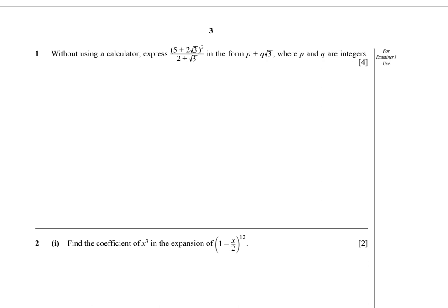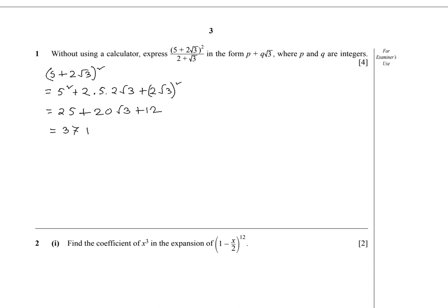Let's expand the whole square term: (5 + 2√3)² equals 5² + 2 × 5 × 2√3 + (2√3)², which gives us 25 + 20√3 + 12. That simplifies to 37 + 20√3.